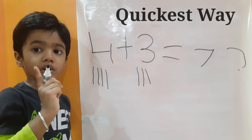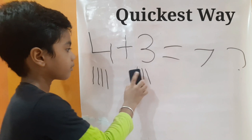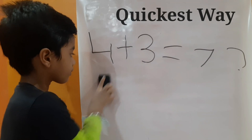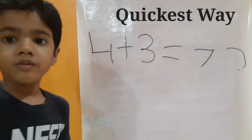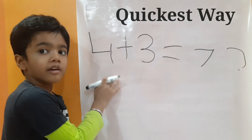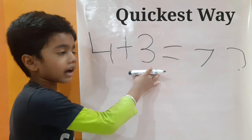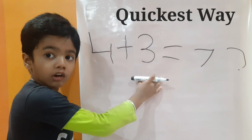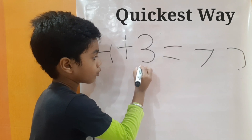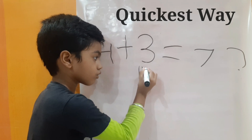Let's do it the quickest way. On the left side we have 4, so let's leave 4. On the right side we have 3, so draw 3 lines below 3: 1, 2, 3.